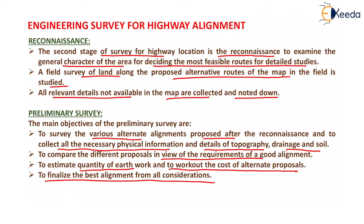Alignments are finalized during the preliminary survey by considering the cost of that particular alignment as well as its maximum utilization. After considering all parameters — that is, the cost of the alignment, the quantity of earthwork, and various other parameters — we finalize the best alignment in the preliminary survey.